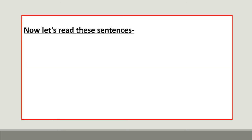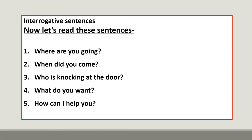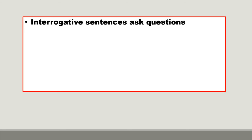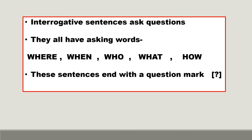Now we will talk about interrogative sentences. Let's read these sentences: 'Where are you going?' 'When did you come?' 'Who is knocking at the door?' 'What do you want?' 'How can I help you?' All these sentences are asking something and they end with a question mark. Interrogative sentences have asking words — for example, where, when, who, what, how — and they end with a question mark.